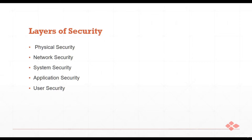Application security covers the ways software and hardware are used, along with procedural methods for protecting the application. User security ensures that only authenticated and authorized users are allowed to log in and perform the functionalities they are permitted to do.